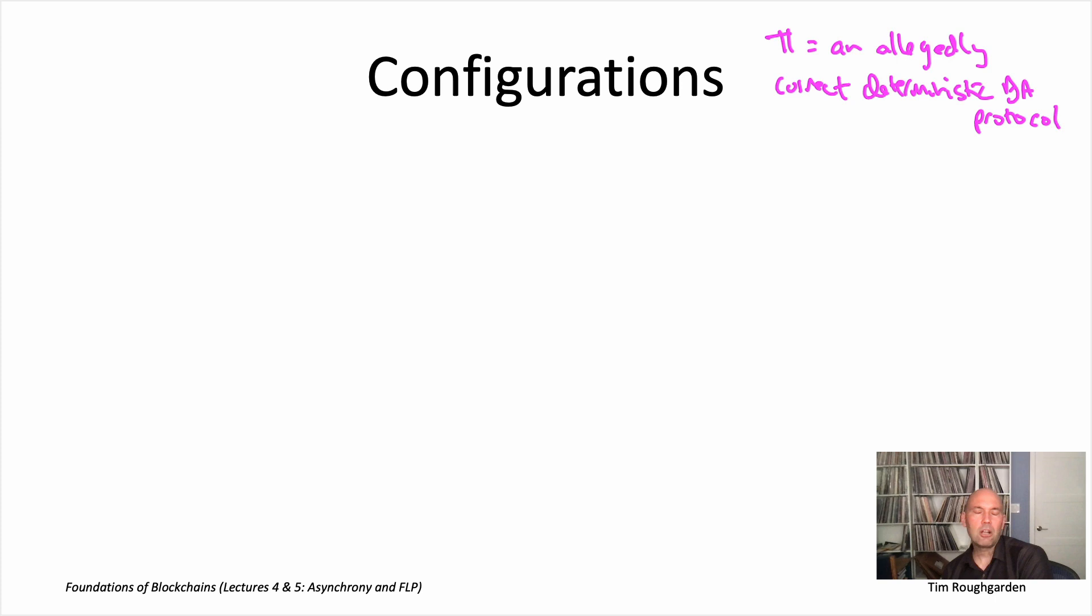More specifically, our plan is to use the fact that π satisfies agreement and validity against it, and we're going to show that it doesn't terminate. So really what we're going to show is that any protocol that's guaranteed to satisfy both agreement and validity upon termination must necessarily have situations in which it runs forever, which is, of course, a violation of termination.